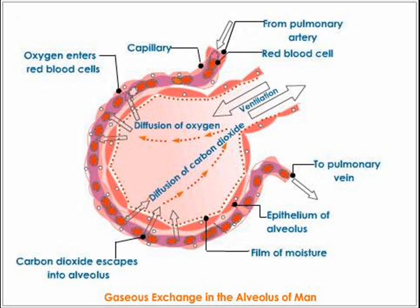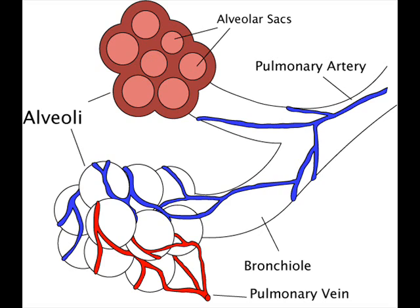They're surrounded by a network of capillaries, giving each alveolus its own blood supply. Oxygen diffuses out of the alveoli, across the alveoli epithelium and the capillary endothelium — which is the type of epithelium that forms the capillary wall — and into the hemoglobin in the blood.